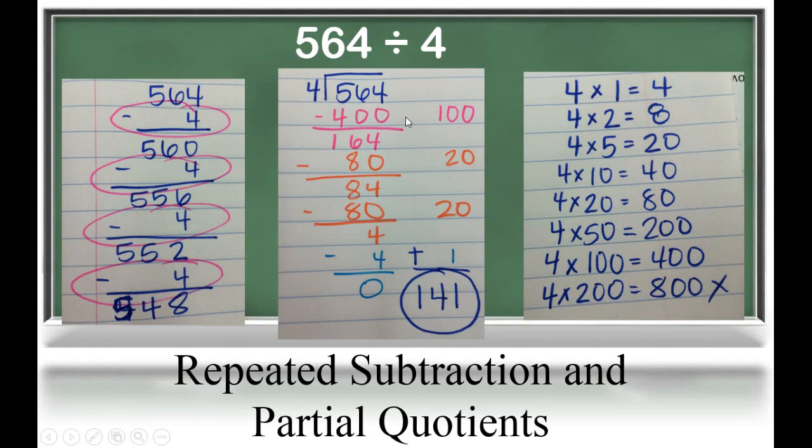We're going to take our dividend and subtract by a large multiple, which is 400. And we have 164 left over. We need to record the number of groups of 4 we have subtracted from our dividend. When we subtracted 400, we subtracted 100 groups of 4.